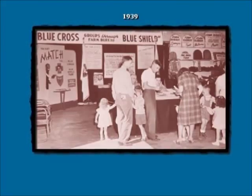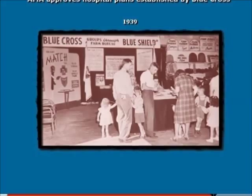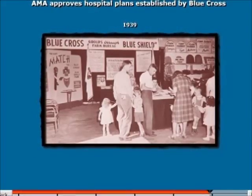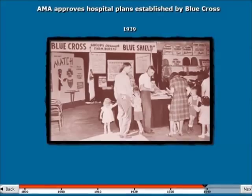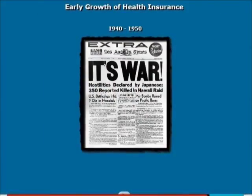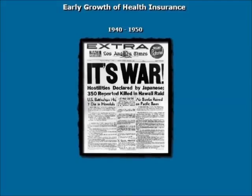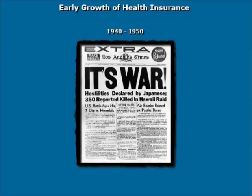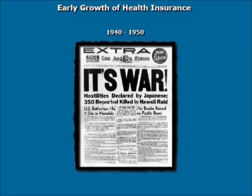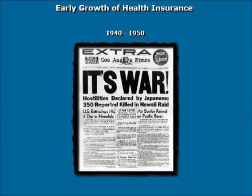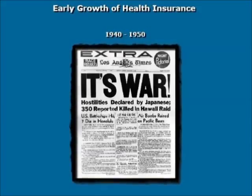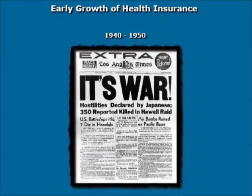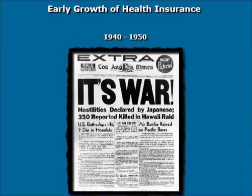The next presentation for Chapter One will deal with some of the changes that happened with World War II in 1941. We'll talk about price controls, how organized labor became a bigger player in getting more insurance, and some of the tax structure and federal tax code changes that occurred during that time frame.